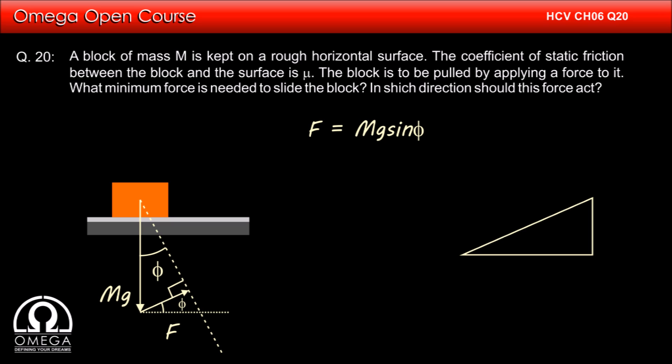Since tan phi is equal to mu, applying simple trigonometry, we can find the value of sin phi which turns out to be mu divided by root under 1 plus mu square. Putting this value, we get F is equal to mu mg divided by root under 1 plus mu square.